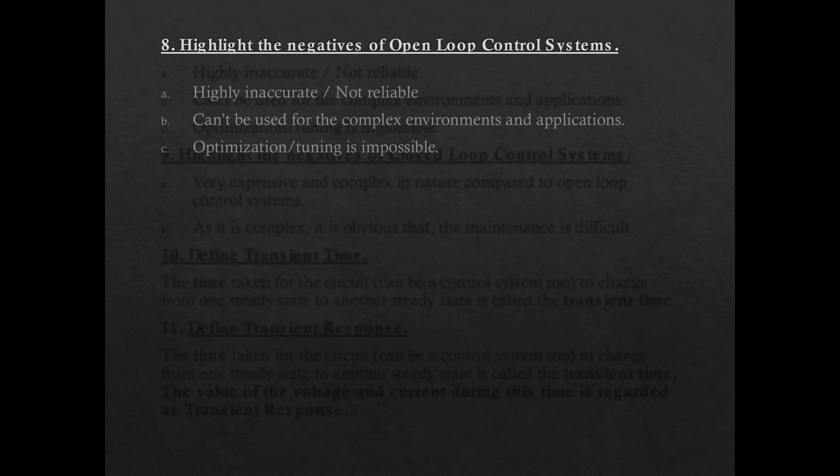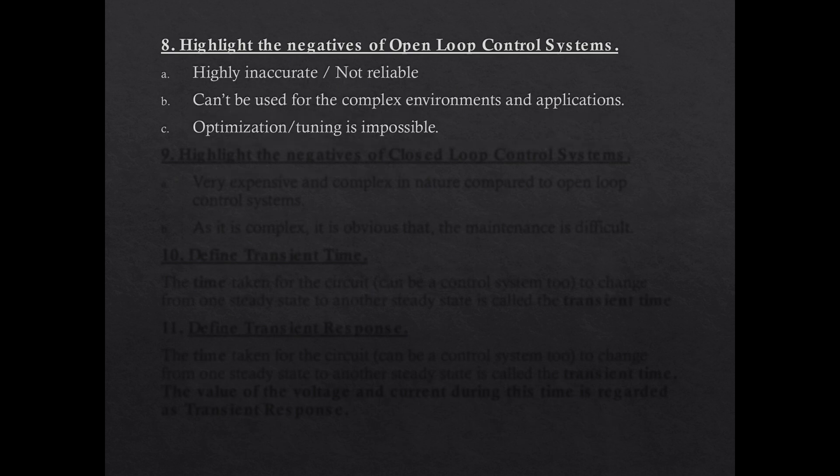Highlight the negatives of an open loop control system. It is highly inaccurate and not reliable because there is no feedback. We cannot correct ourselves in an open loop control system, and complex environments cannot be handled with open loop because feedback is clearly needed there.